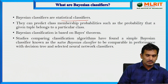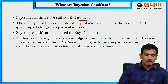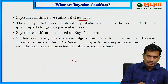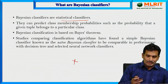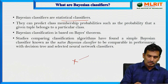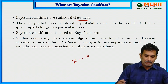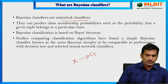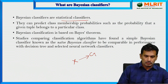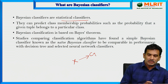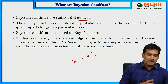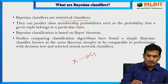These Bayesian classifiers predict the class membership probabilities. Suppose X is a tuple — it would predict what is the probability that the class label of that particular attribute X is some class C_i. The Bayesian classification is based mainly on Bayes' theorem.